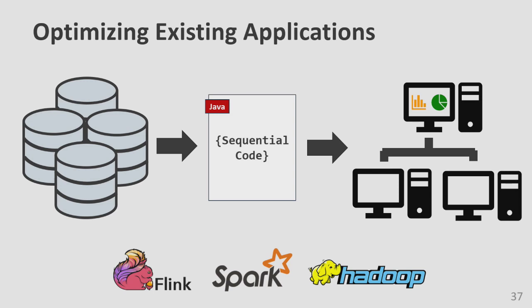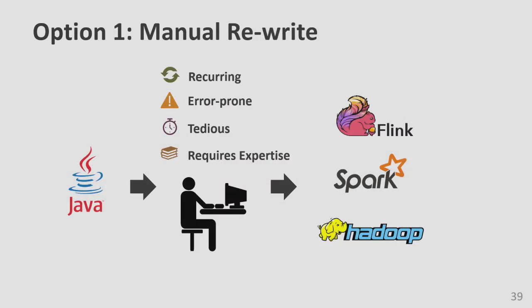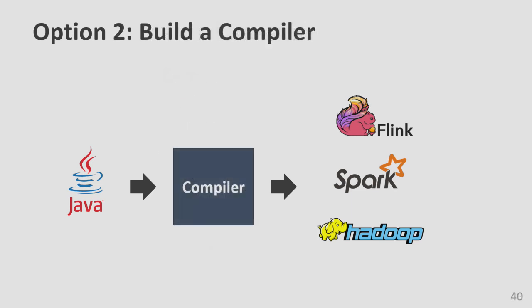The first option is to manually sit down and rewrite all of your code. This is time-consuming, tedious, requires expertise in both the input code and the target frameworks, and you can introduce bugs during translation. What we want to do is completely automate this process by building a compiler that does this translation for you.